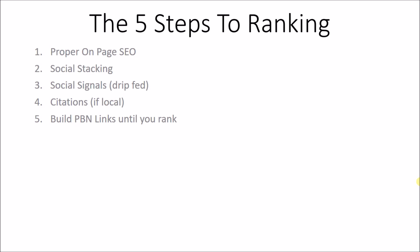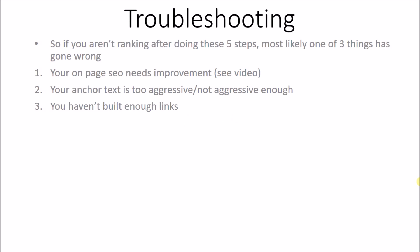Step five is to continuously build PBN links until you rank. That's it. This may seem too easy or oversimplified, but it's not. While there are other tactics like tiered linking and Web 2.0s that also work, if you've never ranked before and are just trying to get your first rank, the easiest thing is to stick to this template. We have a video on every single one of these steps, so you can literally follow each video step by step.